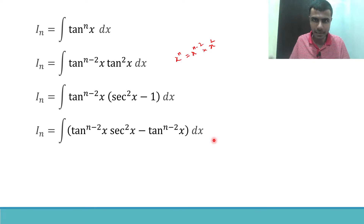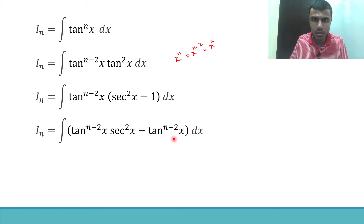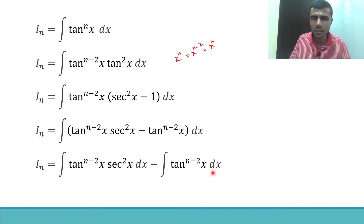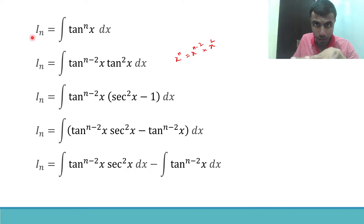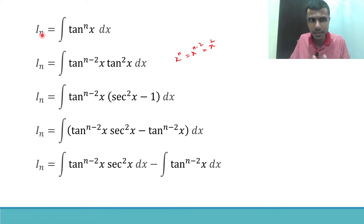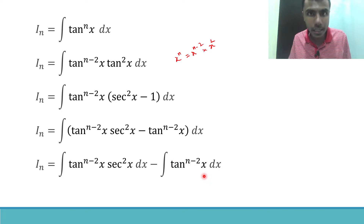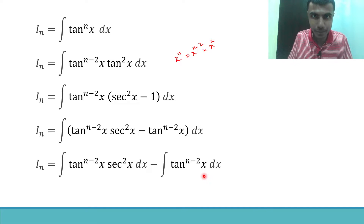Now split the integral — since the two terms are connected by minus, the integral goes to both. Now, I took the integral of tan^n x dx as I_n. So this is I_n. Here I have the integral of tan^(n-2) x — so what should that be?